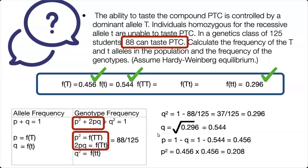Next, we can find P squared. So that's just P times P. That equals 0.208. So we have our frequency of our big T big T genotype.